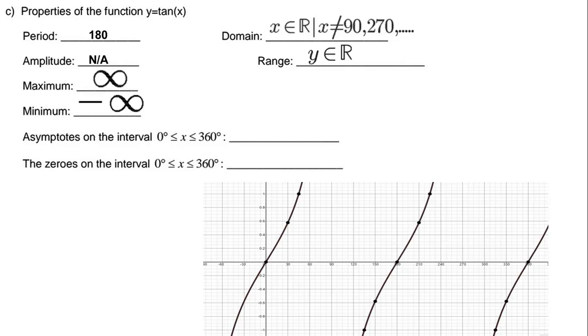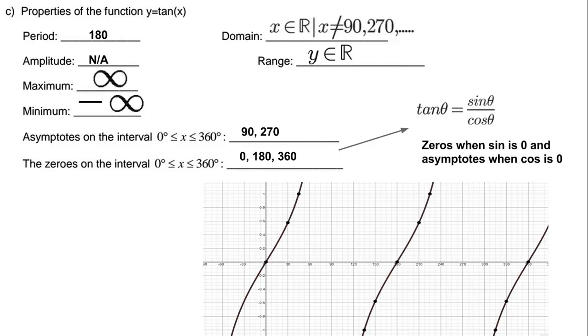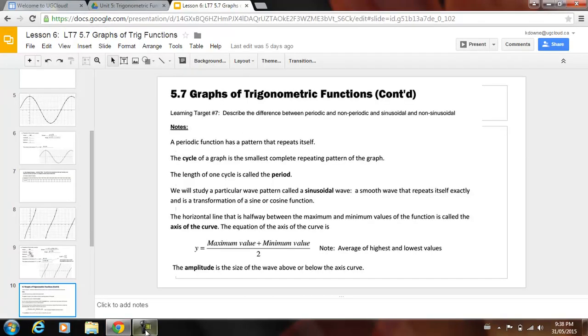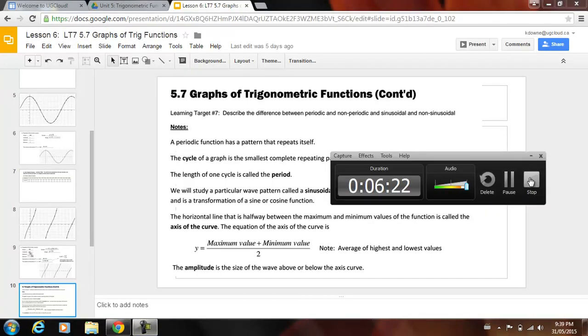The range is all real numbers. The asymptotes are 90 and 270 and the zeros are 0, 180, and 360. Now really what this comes from is that trig identity, tan is sin over cos. Zeros are when sin is 0 and the asymptotes are when cos is 0. And so that gets us into the second part and we'll just upload a new video for that.